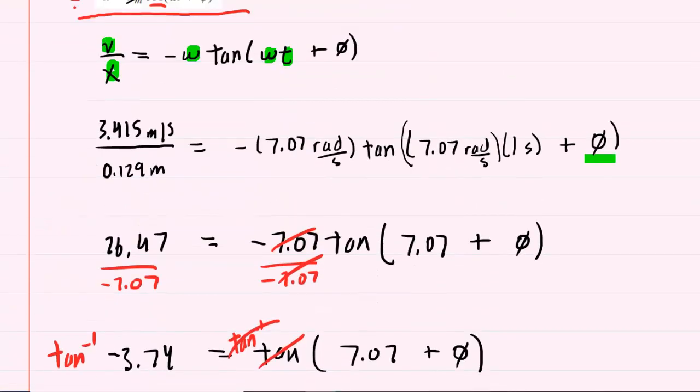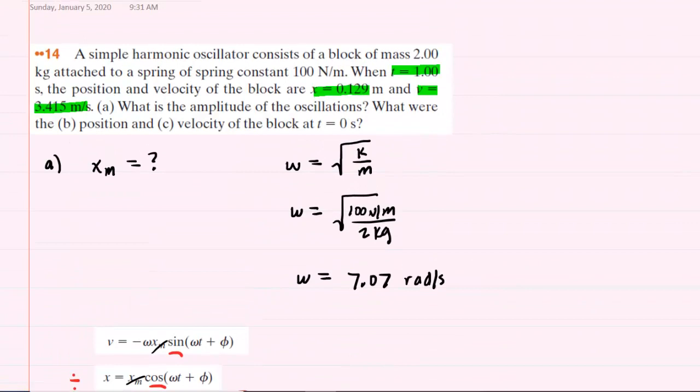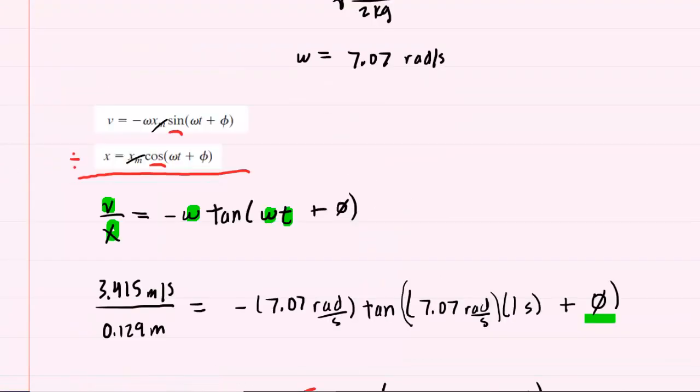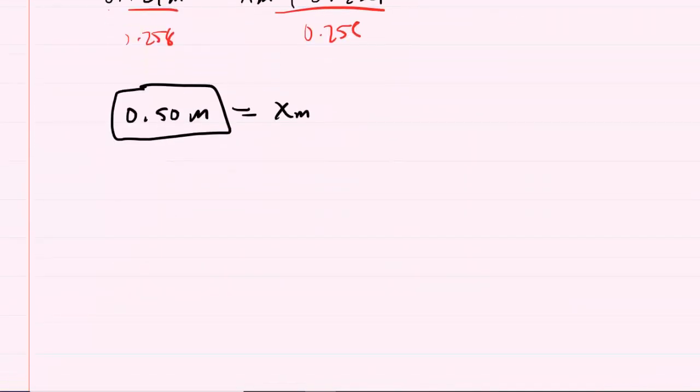Part B, if we look all the way back here, wants the position, which is x, at a time of 0 seconds. So once again, we're going to examine the position equation. We'll paste it in right back here. This time, however, the time is 0 seconds.